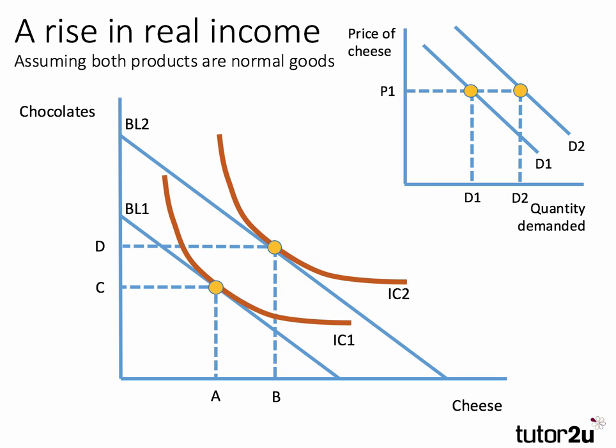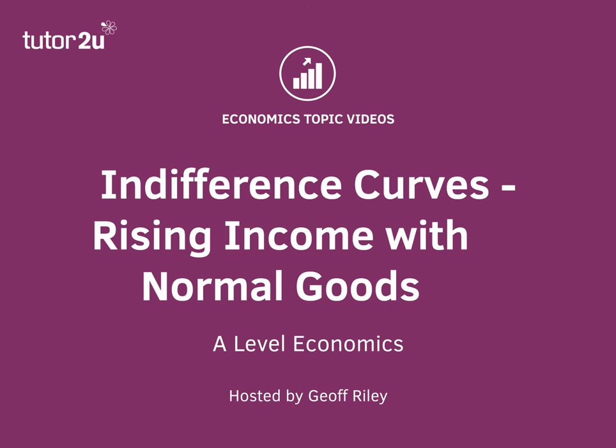We can show a similar thing for chocolates as well, but I won't do that on this occasion. So there we go — indifference curves and rising incomes where both products are normal goods. Thanks a lot.